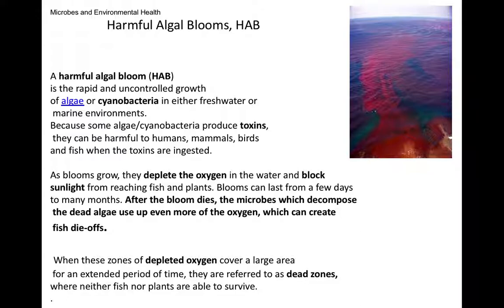Harmful algal blooms occur when there's a rapid, uncontrolled growth of algae or cyanobacteria. Some of these produce toxins that can harm humans, mammals, birds, and fish. Another danger: when a large overgrowth of algae or cyanobacteria eventually dies, other bacteria decomposing the dead matter consume all the oxygen in the water. After the bloom dies, decomposing microbes use up even more oxygen, creating fish die-offs and dead zones where no oxygen is present at all.